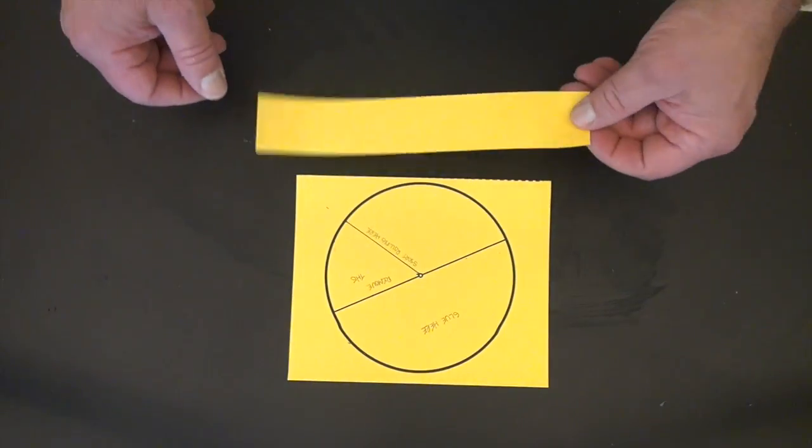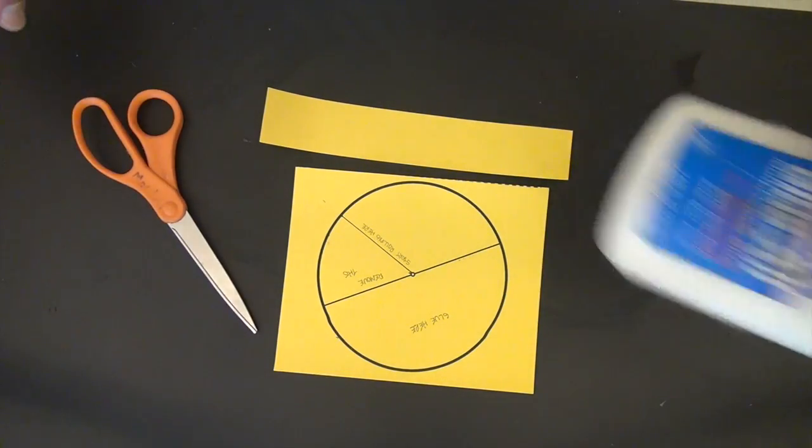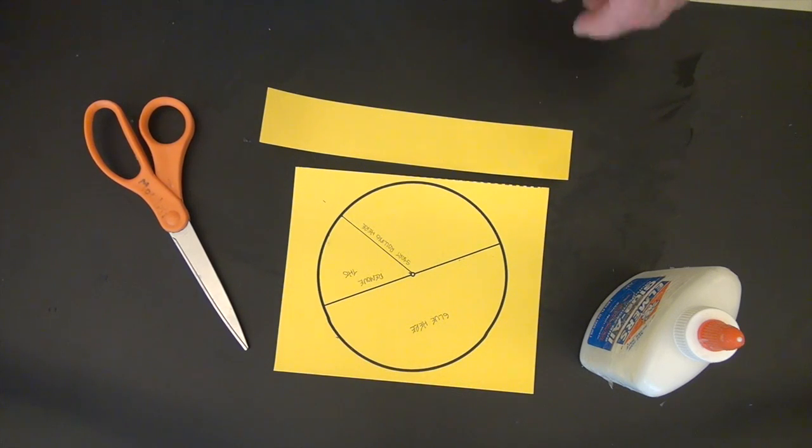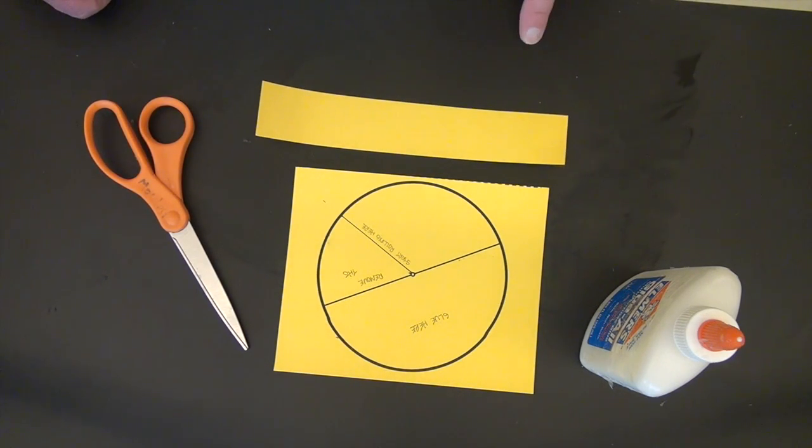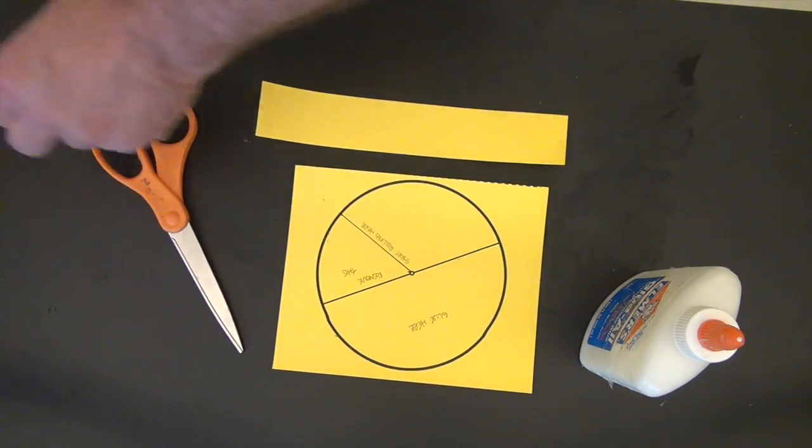So you're going to need your template. This is going to be in the base. Elmer's glue. And I thinned this Elmer's glue out a little bit. It's getting hot and it's not flowing very well. And your body tube. So here's your body tube. Here we go.